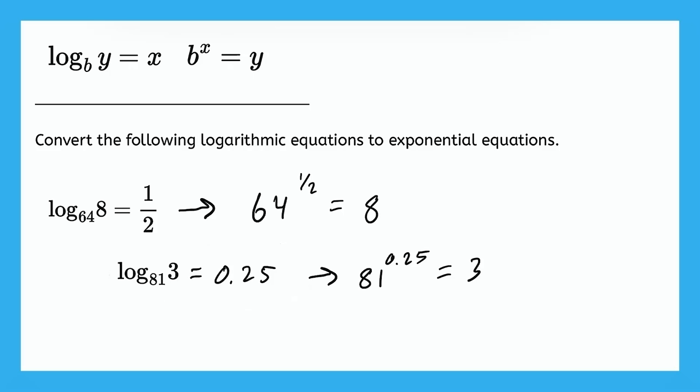All right, so there it is. We have b to the power of x equals y. Just like we got b, x, and y from the logarithmic equation. We've answered both questions. But just for good measure, let's talk about what is 81 to the power of 0.25. Well, this 0.25 could be rewritten as 1 fourth, right? And 81 to the 1 fourth could also be rewritten again as the fourth root. And what is the fourth root of 81? Well, that is 3 because 3 times 3 times 3 times 3 is in fact 81.